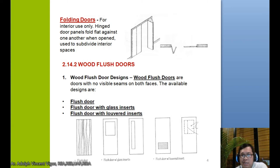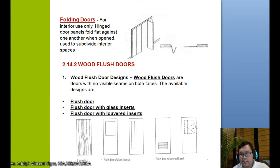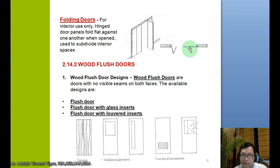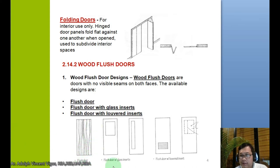Then you have what we call folding doors, also for interior use only. Pinched door panels fold flat against one another when open. They are used to subdivide interior spaces. You may have observed this in function rooms — most function rooms in hotels and restaurants use folding doors to subdivide spaces. We also have wood flush doors, which are doors with no visible seams. Available types include the common flush door, a flush door with glass inserts, and a flush door with a louvered insert, which you commonly see in restrooms.